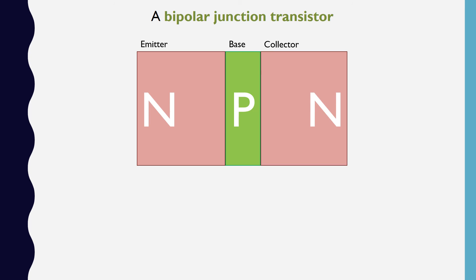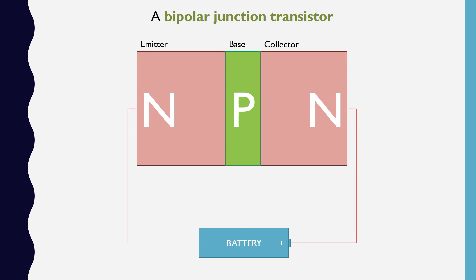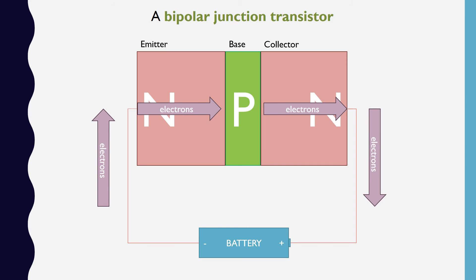If we introduce voltage and try to make a circuit by connecting the emitter and collector to opposite sides of a battery, electrons are able to get closer to the base, but cannot flow across like they could in a diode. Electrons in the collector are attracted toward the positive side of the battery, and some leave the collector.